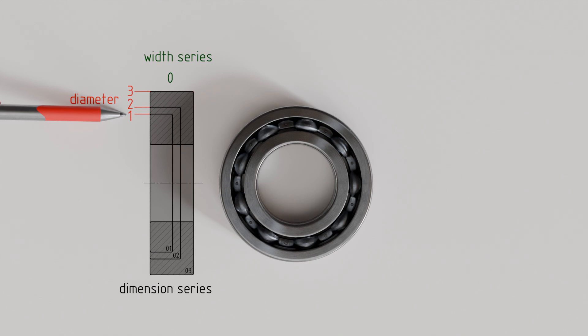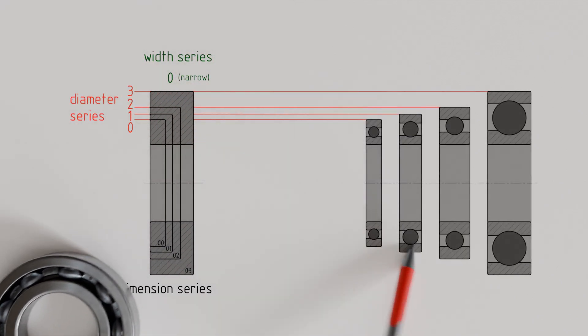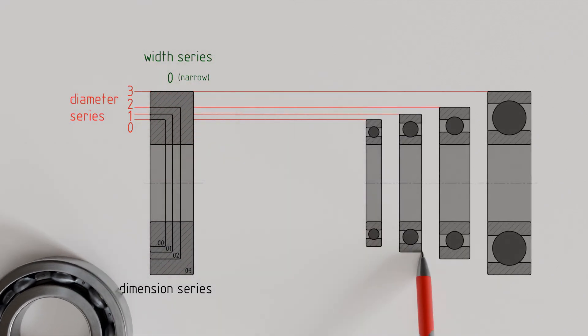Bearings of diameter series 0 have the smallest outer diameters. The comparison of these bearings, all belonging to width series 0, shows that they are designed to be relatively narrow in relation to their outer diameter. Bearings of width series 0 are therefore relatively narrow bearings.